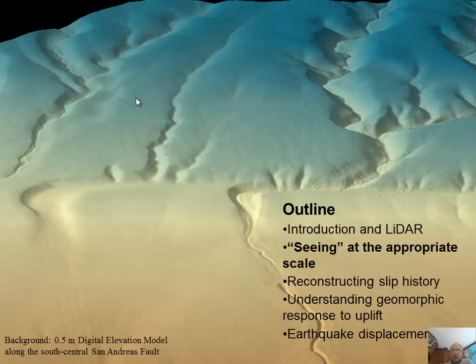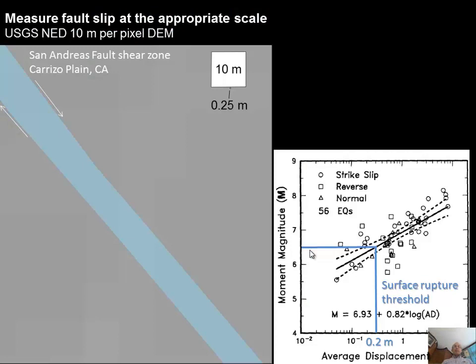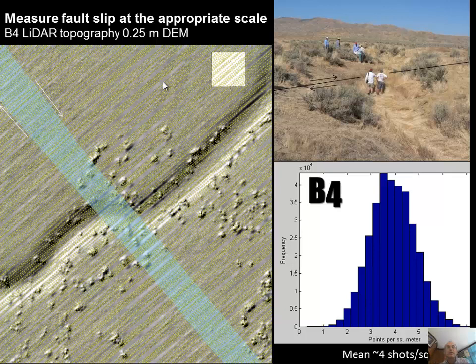Now I'm going to talk a little bit about why we need LiDAR — we need to see at the appropriate scale. Here's an example: the San Andreas Fault is in this picture, and this is a hillshade, but it's a 10-meter resolution hillshade — so you don't see anything. But this is what the place looks like in the LiDAR. The yellow dots are the actual laser returns on the ground — the point cloud. This is a digital surface model at 25 centimeters per pixel, and I can see this offset stream channel quite well.